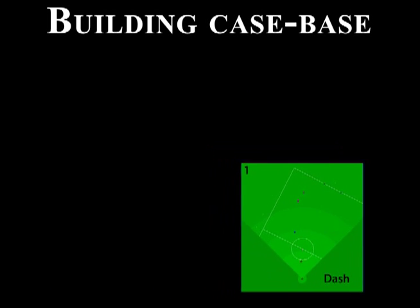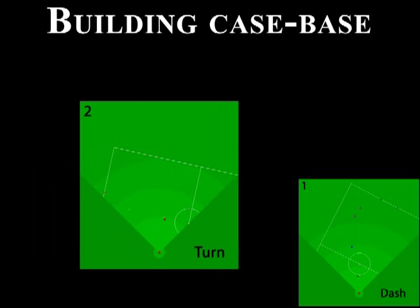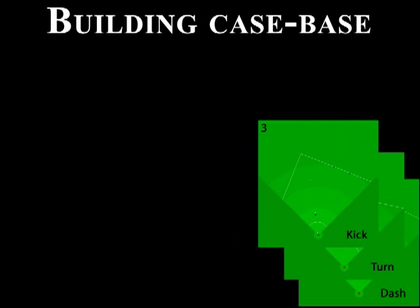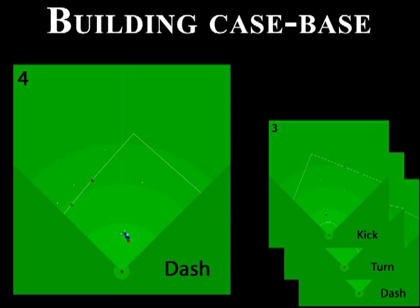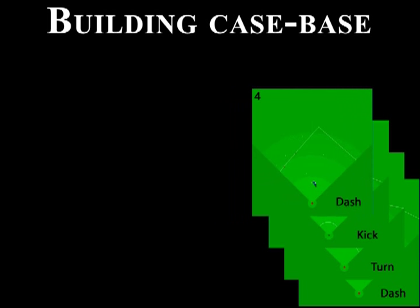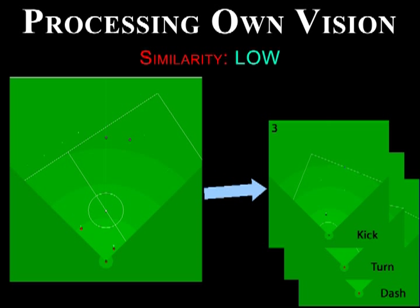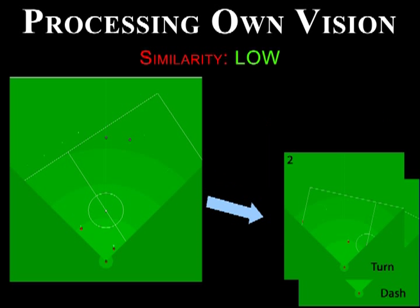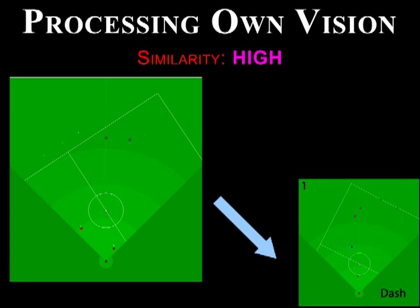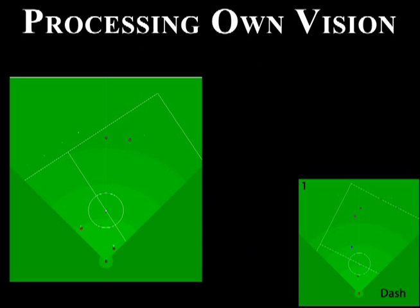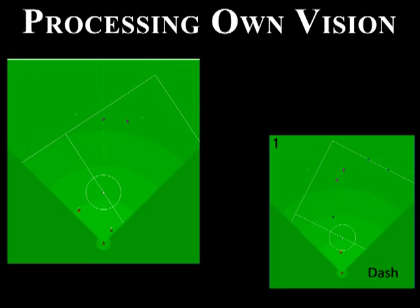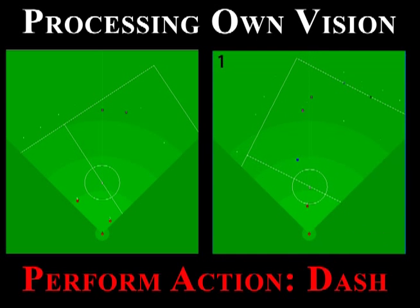After observing the teacher for some amount of time, the imitating agent will have memorized a number of cases that it will store in a case base. When the imitating agent plays soccer, it will be presented with its own vision of the field. It will then compare its vision with the visions that it has stored in the cases in the case base. What the agent is trying to do is to find a memorized situation that is most similar to its current situation, so it can act just like the teacher would. Once the agent finds the case with the most similar vision, it can then use the action from that case in an attempt to behave like the teacher.